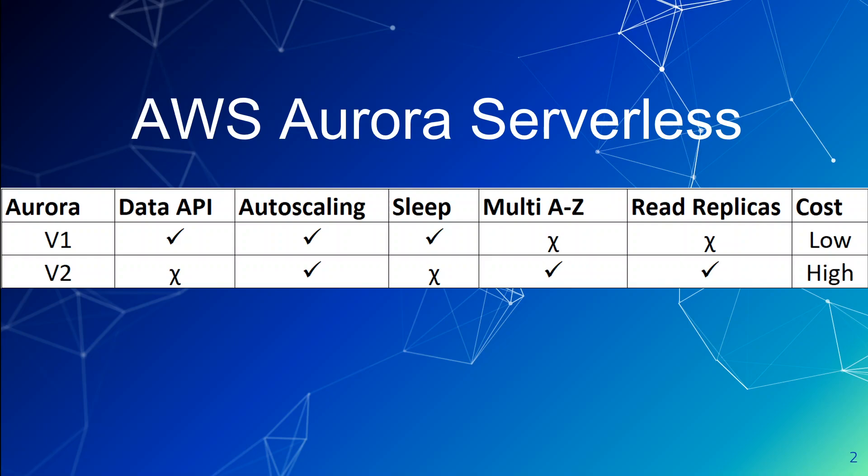So if you're still running v1 workloads, you should be migrating to v2. But if you do, you should be aware of a few things and need to adjust your database applications or even the Aurora Serverless configuration accordingly.